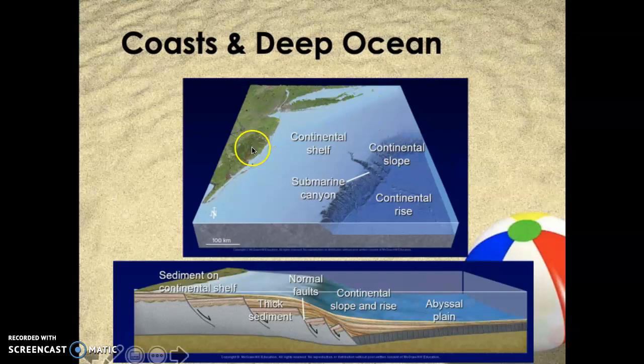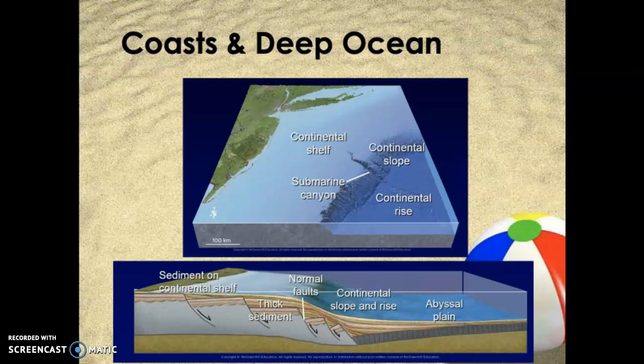We started with sediment on the shoreline, moving along the beach. We moved it offshore with turbidity currents and even onto the deep ocean floor. We talked about waves and erosion and longshore drift. The kind of sediments we're talking about here are what we would call the classic sediments — we're going to classify these when they get turned into rock. They're essentially pieces of rock, everything from gravel and sand down to silt and clay.